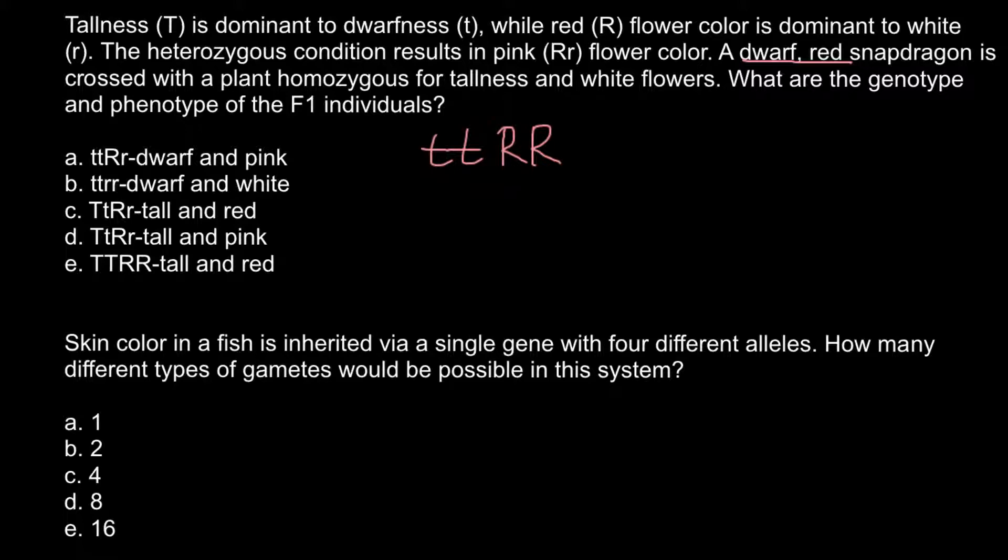We have to cross with another parent that is homozygous for tallness and white flowers. This is going to be capital T capital T and small r small r genotype.